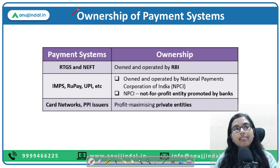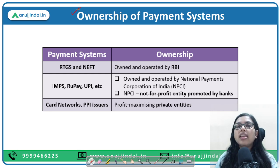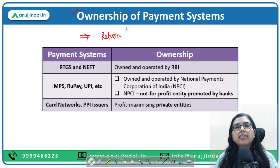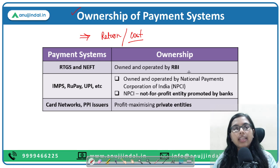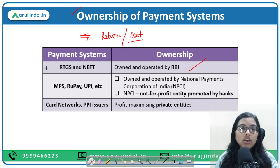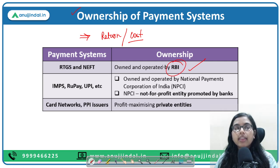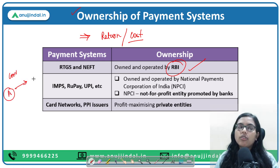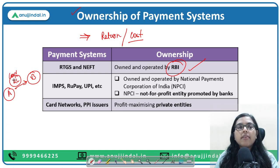Now let's understand the ownership of the payment system. The owner has the right to determine returns and costs associated with the system. RTGS and NEFT are operated and owned by RBI — so for RTGS transactions, a convenience fee is paid by the payer, the person sending the money. IMPS, RuPay, UPI, and AEPS — Aadhaar Enabled Payment System — all come under NPCI, the National Payments Corporation of India, which is a not-for-profit organization promoted entirely by banks.